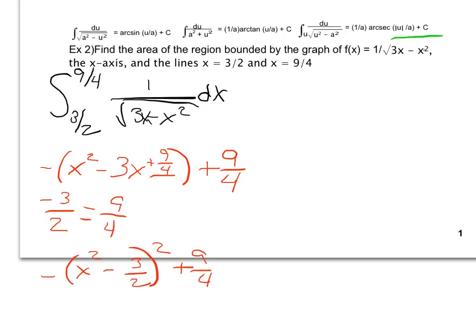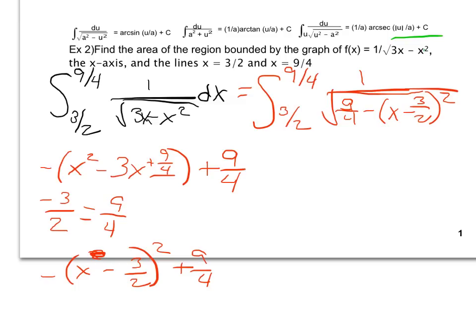So once I change my integral to contain that, then I will have 3 over 2, 9 over 4, 1 over the square root of, and I'm going to go ahead and put the positive number first, 9 over 4 minus x minus 3 over 2 squared. And now, from here, I notice that this matches this formula right here, because my a is going to be the square root of 9 over 4, which is 3 over 2. My u is going to be x minus 3 over 2, and notice that my du is going to end up being just dx.